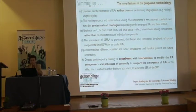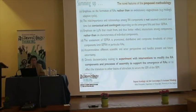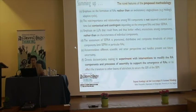The methodology places emphasis on lower-level properties that result from and thus better reflect interactions among components, rather than on the characteristics of the individual components like slope or temperature. These properties reflect relationships and thus the contextuality and contingency of the system. The assessment of the fit is provisional, distributed, and composite, and thresholds of critical components may limit the fit in particular assemblages. It accommodates different scientific and actor perspectives and future uncertainty, and directs decision and policy making to experiment with interventions to modify assemblage components and processes to support the emergence of response assemblages or to affect the transition to other basins of attraction.